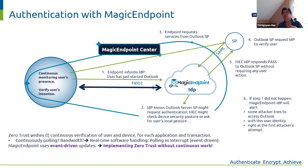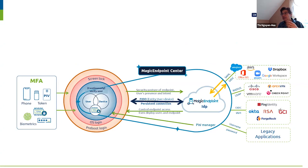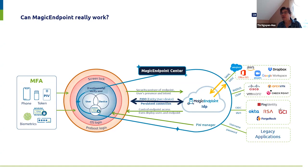So with this method, we believe we solve zero-trust continuous verification in a very elegant way — in an event-driven way. We have not only continuous but always-verified authentication, without continuous polling and overhead. We believe this is so game-changing — can magic endpoint really work? This is so revolutionary.